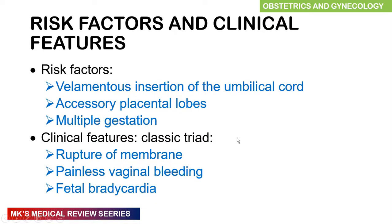Risk factors for vasa previa include filamentous insertion of the umbilical cord, accessory placental lobes, and multiple gestations. The classic clinical triad consists of: rupture of membranes — typically presenting as a gush of fluid — followed by painless vaginal bleeding, and fetal bradycardia on the fetal heart monitor.